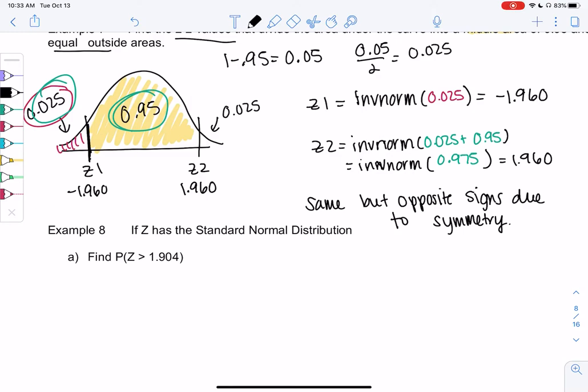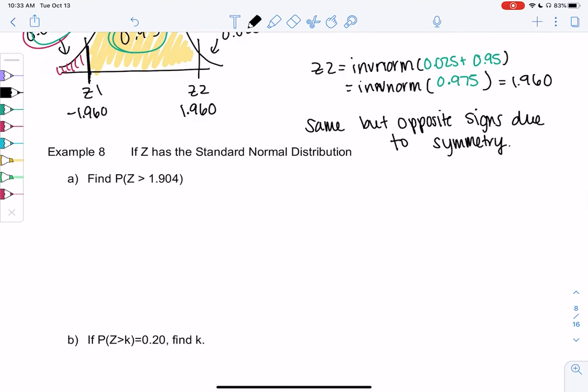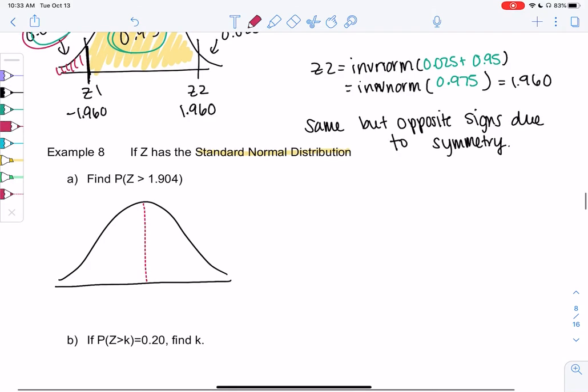Example 8: If Z has the standard normal distribution, so anytime I see that I immediately think of this normal curve with zero in the middle. We want to find the probability P of Z greater than 1.904, which means we want the area because area equals probability.